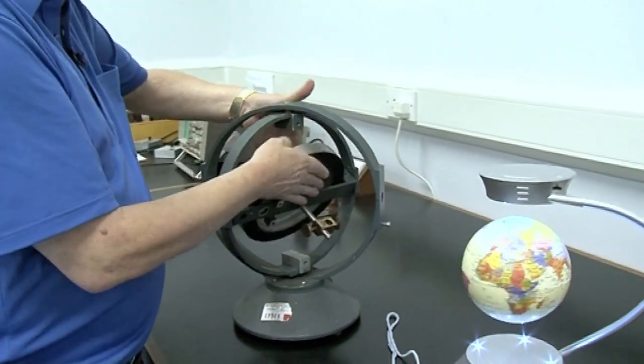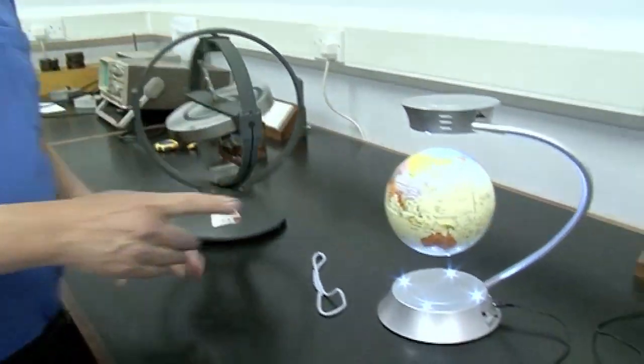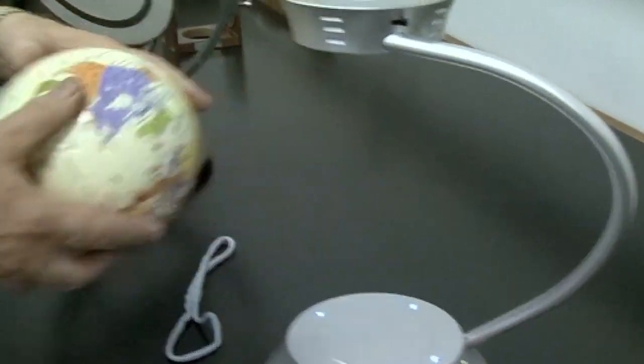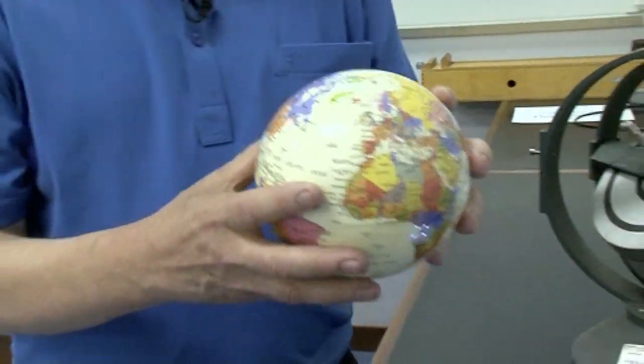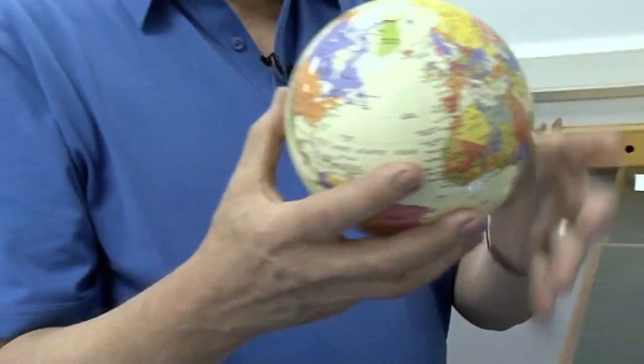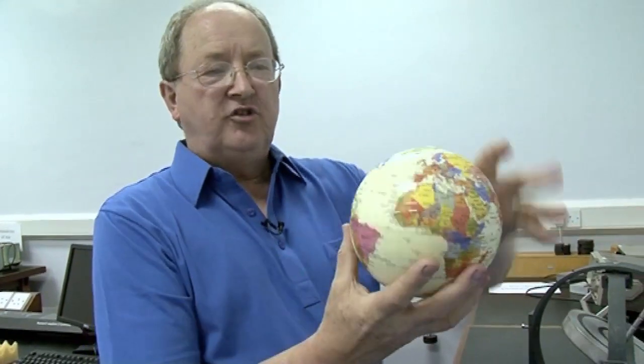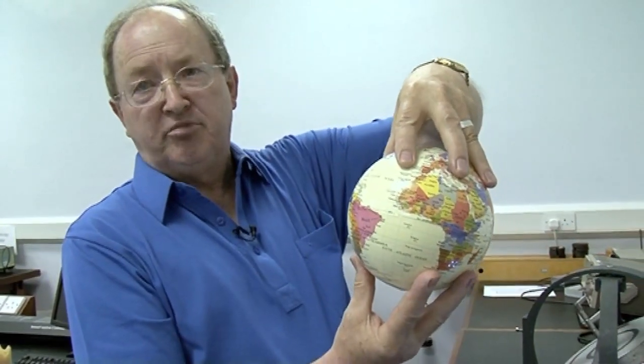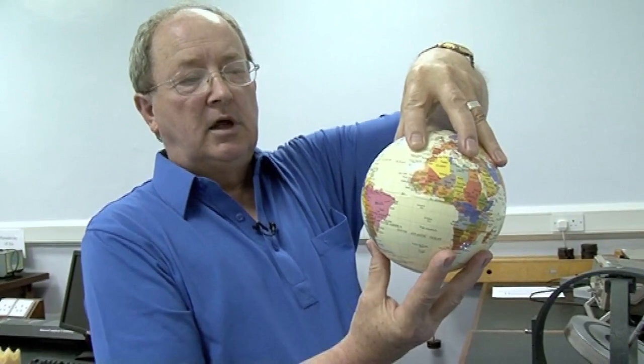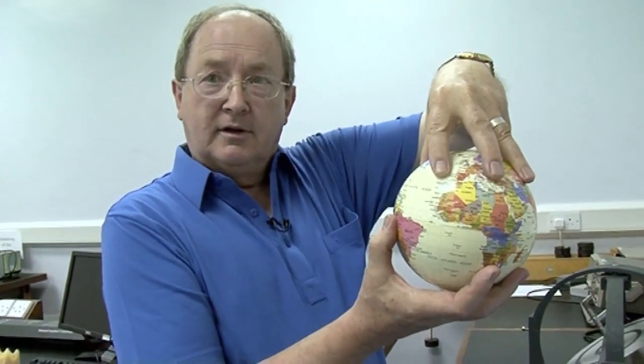So the question then is, is there any effect like that on the Earth? So if I take this sphere, one question that arose early on is, because of the spinning of the Earth, is it squashed at the poles and fatter at the equator? Or is it elongated at the poles, a prolate ellipsoid they call it, and narrow at the equator? And people really didn't know the answer to this.